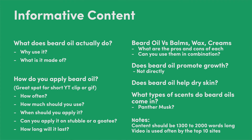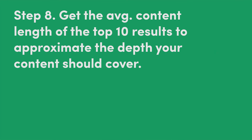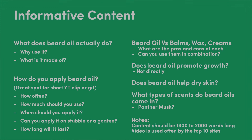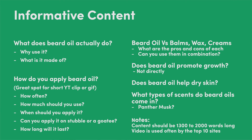Step eight is to get the average content length of the top 10 results to approximate the depth of your content. You don't need to be too specific. I used SEMrush and looked at the top 10 — the average was about 1,200 to 1,300 words. Don't get too caught up on it, just use it as an approximation. If you don't have a premium tool like SEMrush or Ahrefs, you could literally visit each of those pages, copy out the body content, paste that into a Google doc, collect all that, and then get your average that way for free.